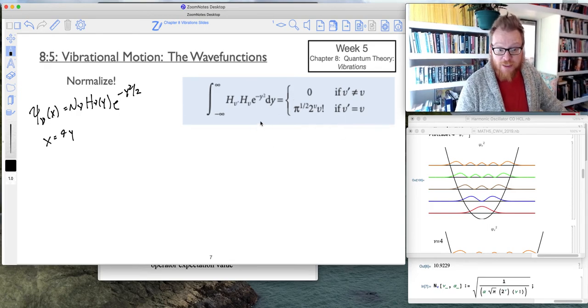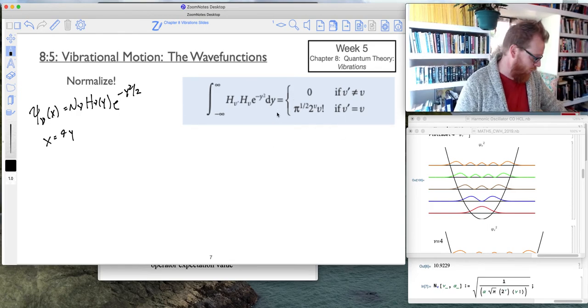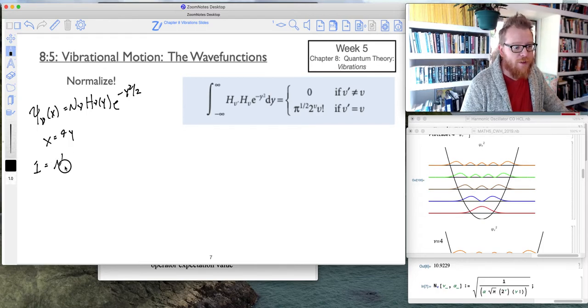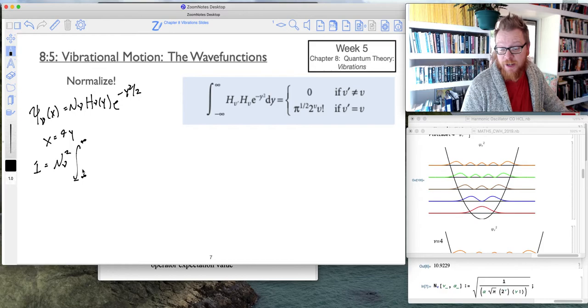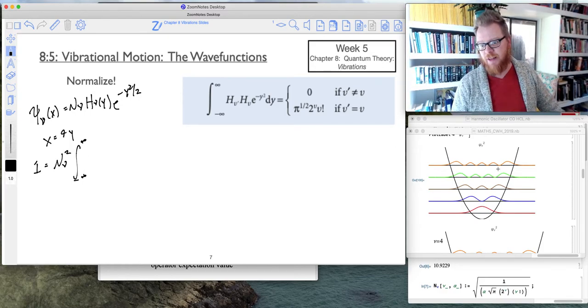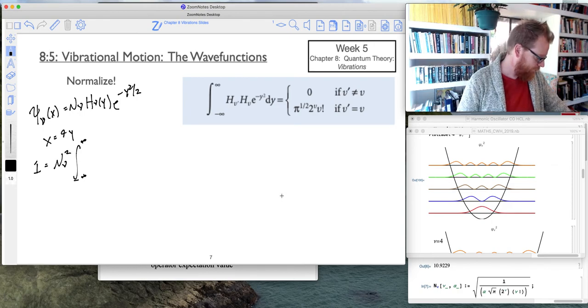So now we have this thing put together already. And so we know to normalize this function, it's going to be given as 1 equals this normalization constant squared. And in this case, by our boundary conditions, we integrate from negative infinity to positive infinity, the large displacement. You can see I've got that picture right there.